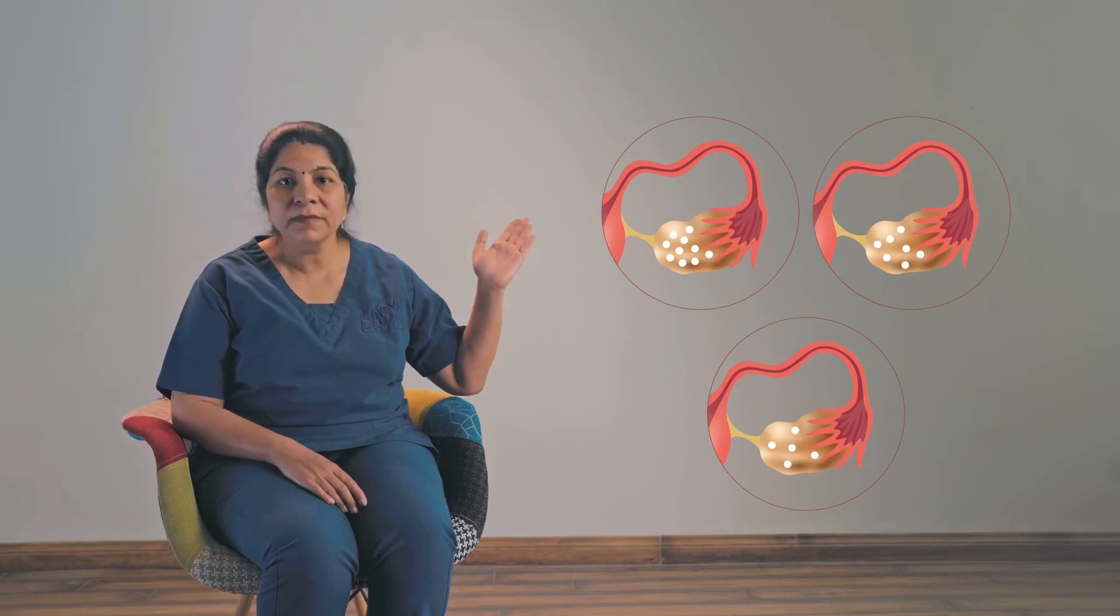So in the beginning of the cycle on the second or third day, there are around 8 to 10 eggs in both the ovaries with a normal ovarian reserve. Out of these 8 to 10 eggs, only one egg becomes dominant and is utilized in that cycle. So for every one good egg we are actually losing about 10 to 12 eggs. As you age, obviously the number of remaining eggs becomes less.